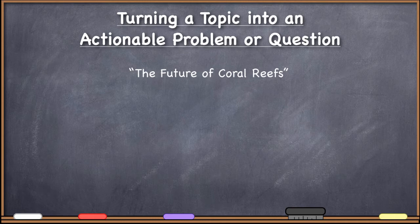What's the problem with that? On one level nothing — fantastic, we can do all kinds of different studies on coral reefs. But what's essential to understand is that 'the future of coral reefs' is a topic, not an actionable problem or question that we can actually sit down and do GIS with. No one can sit down in front of their computer with GIS software and say 'I'm going to spend this afternoon coming up with a fantastic GIS project that will tell me the future of coral reefs.' It's just not possible. This is a topic, and to get to step one we've got to narrow it down to a very actionable question.